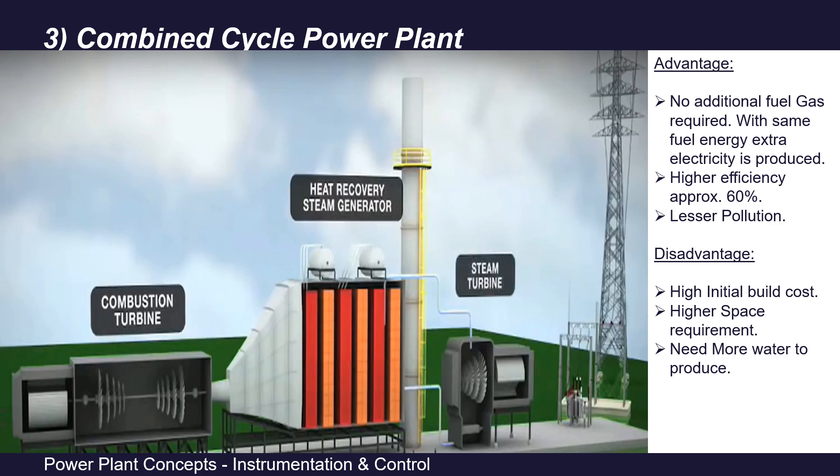The advantages of a combined cycle power plant: no additional fuel gas is required — fuel gas is only fed in the Brayton cycle to rotate the gas turbine — so with the same fuel energy, extra electricity is produced. These power plants have a higher efficiency of approximately 60%. As the exhaust gases are already cooled, there is lesser pollution. The disadvantages are higher initial building cost, more components requiring higher space, and a need for more water to produce steam.